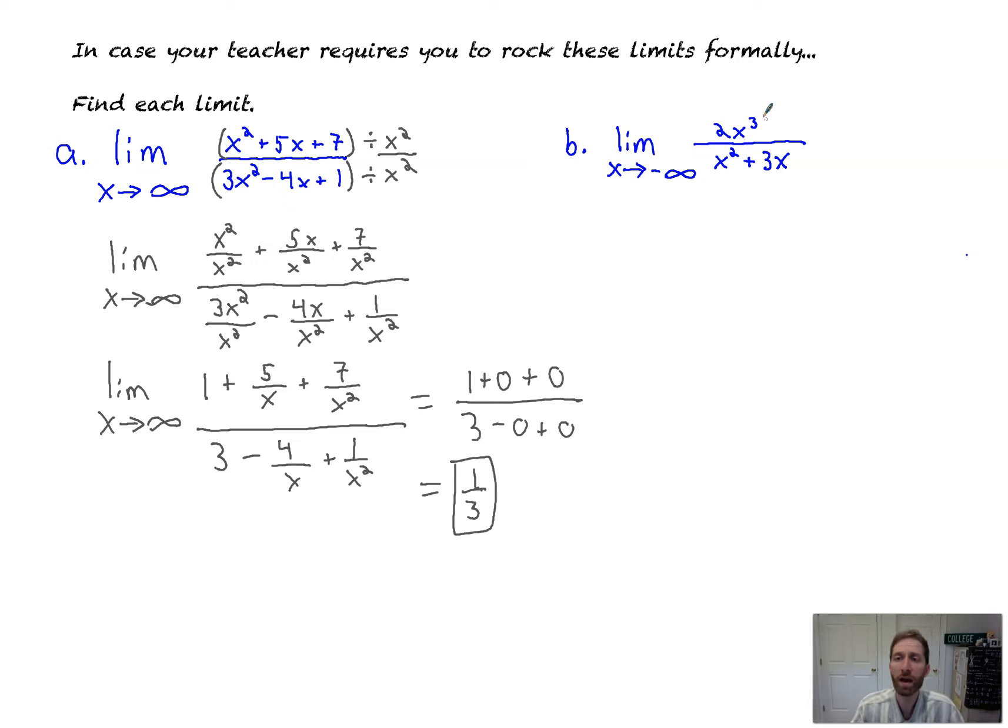So in this case, we've got x cubed in the numerator as the highest power. Here we have x squared as the highest power. So we're going to divide everything by the highest power overall, and that would be x cubed. So in this way, I'm going to show you how to do it with multiplication. Division by x cubed is the same as multiplication by 1 over x cubed. That is the same exact thing.